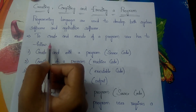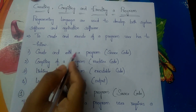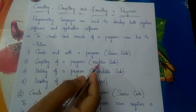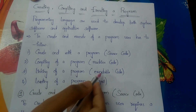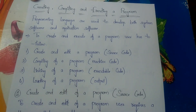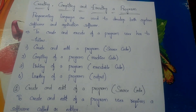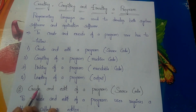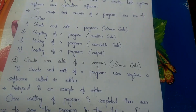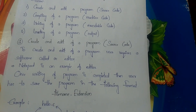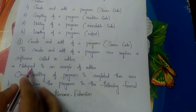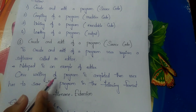The first step is creating and editing a program, which produces the source code. To create and edit a program, the user requires a software called an editor. The editor is used to create and edit a program. The best example of an editor is Notepad.